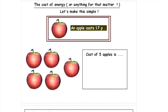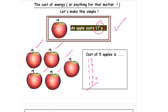The cost of energy — or anything for that matter. We've got an apple here and it costs 17p. We have 5 apples. How much would 5 apples cost? I've had pupils before writing down 17 five times and adding up all of those numbers to work out the answer. Why are you doing that? I wouldn't be doing that.